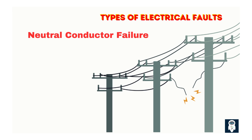The last fault type is neutral conductor failure. In low-voltage networks, a broken neutral conductor can unbalance the system — some phases may experience higher voltages while others drop. This imbalance can disrupt power distribution and create safety hazards. This type of fault can significantly impact the reliability of the electrical system and needs to be identified and addressed promptly to prevent further issues.